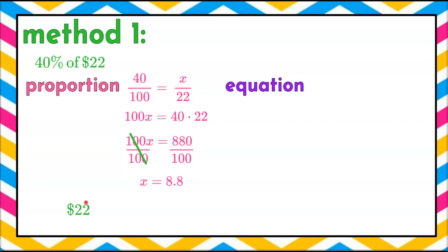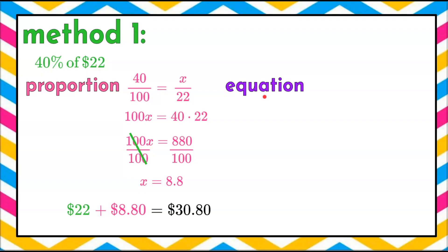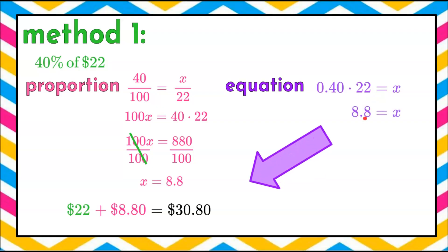So $22 plus $8.80 equals $30.80. Lucas's cost for materials to make the dress was $22, his 40% markup is $8.80, and the customer will pay $30.80. Now let's validate this with the equation method. We write 40% as a decimal: move the decimal point two spaces to the left, giving 0.40. Multiply 0.40 by 22, and we get 8.8, or $8.80 — the same value.